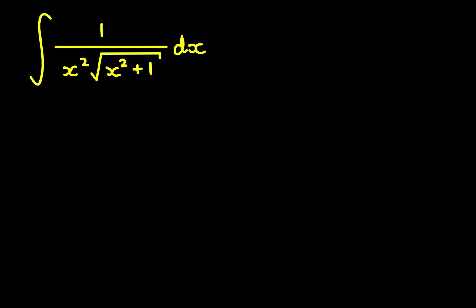Remember for trig substitution, when you have the square root and an x squared, or a term squared, plus or minus a constant, or a constant plus or minus a term squared, the way to choose which trig ratio you want your term to be equal to — which substitution you want to make — is with your trig identities.